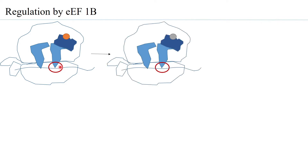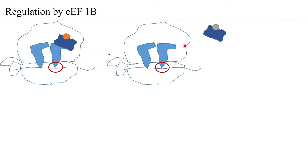If there is a correct codon-anticodon interaction, the GTPase activity of EEF1A is enhanced because of the correct positioning, causing the GTP of elongation factor 1A to be hydrolyzed to GDP. In the GDP-bound form, EEF1A's affinity to bind both the large subunit and the tRNA decreases, and therefore it is released.